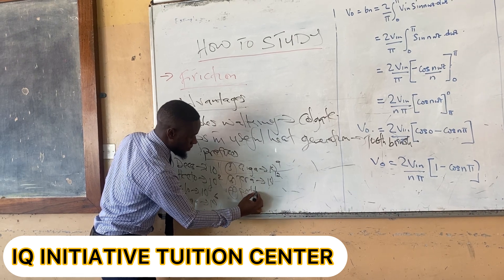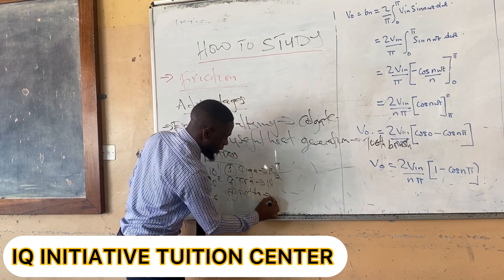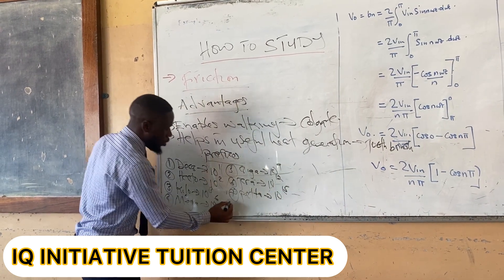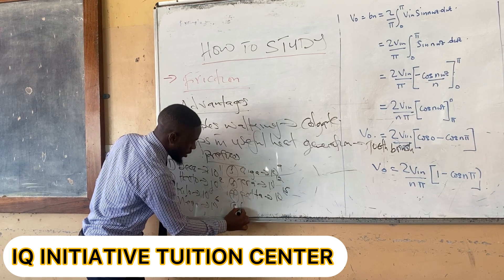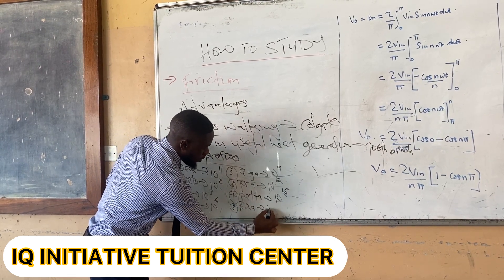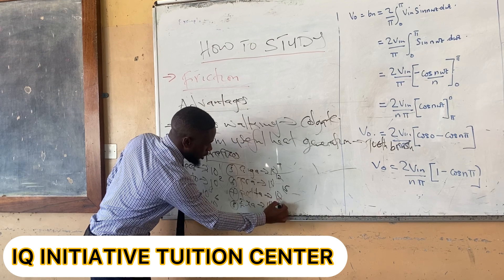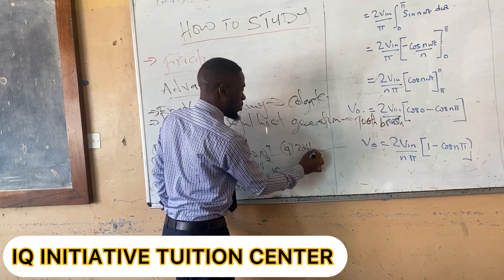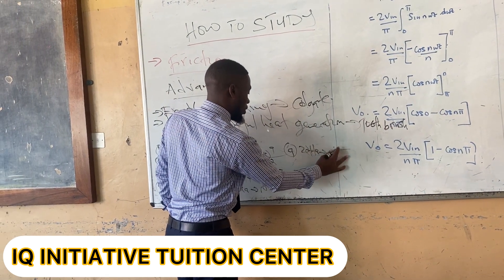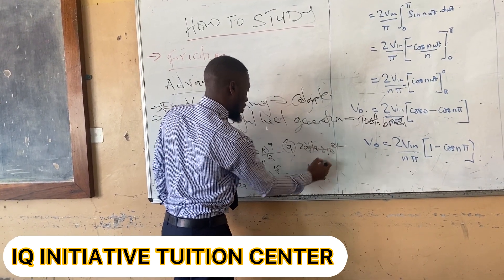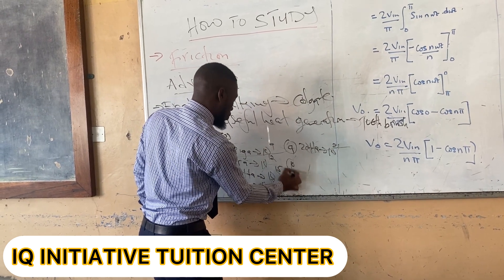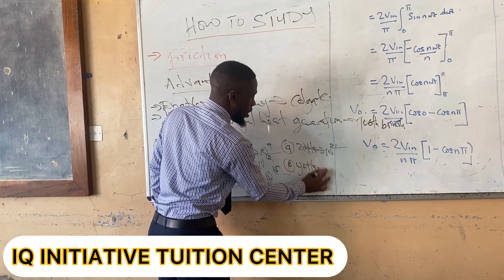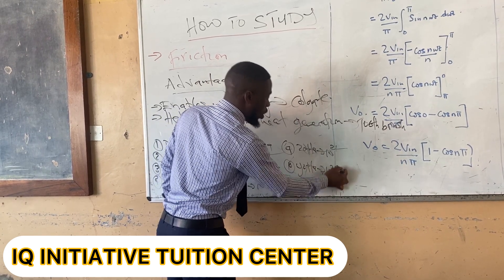Continuing the prefixes: from tera we go to peta (10 to the power 15), then hexa (10 to the power 18), then zeta (10 to the power 21), and finally yota or exa (10 to the power 24).